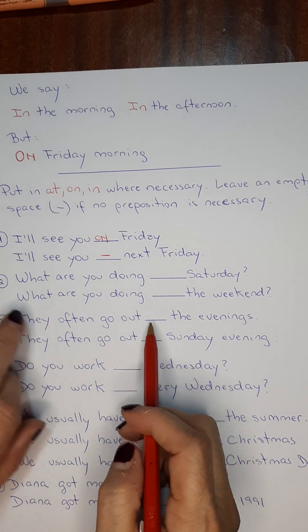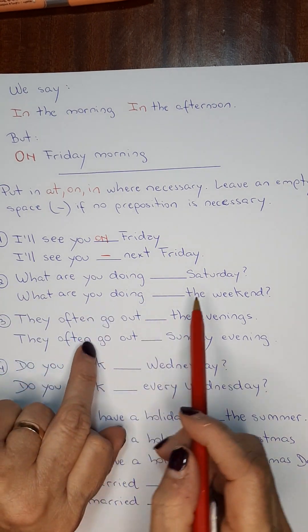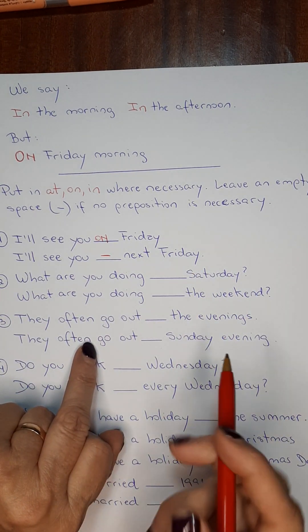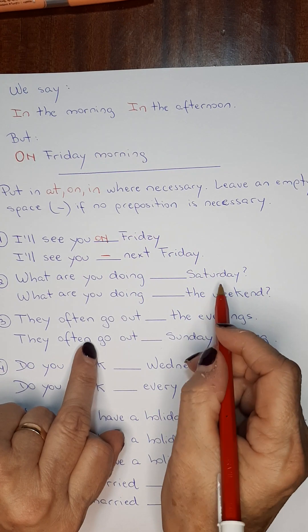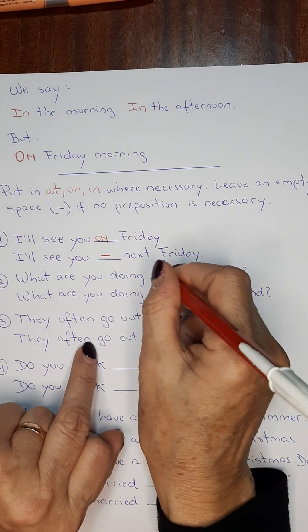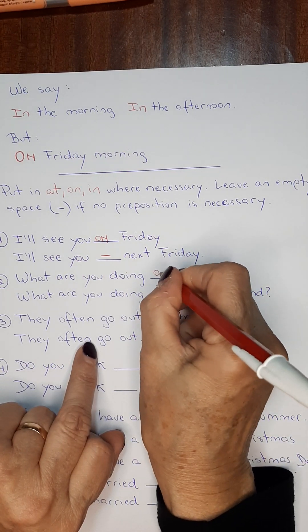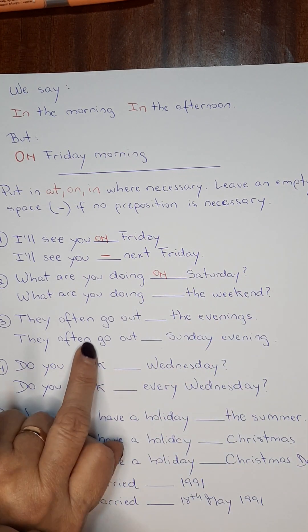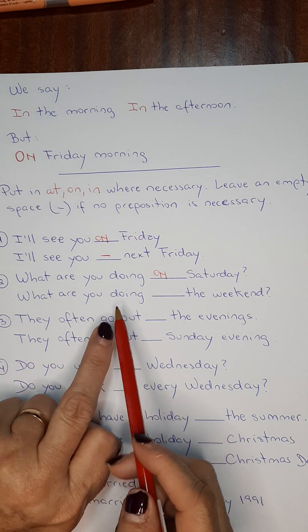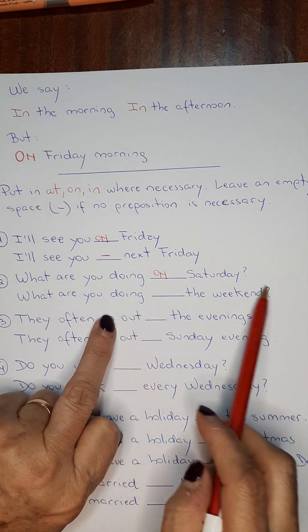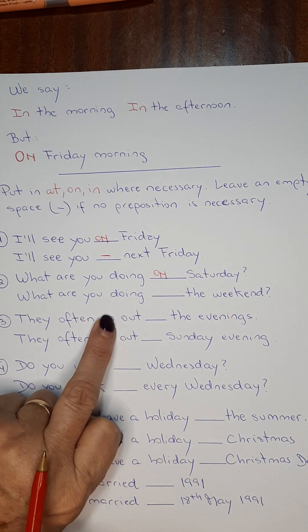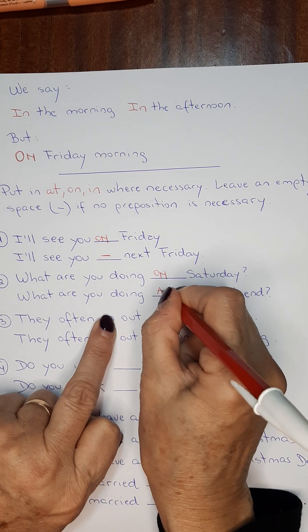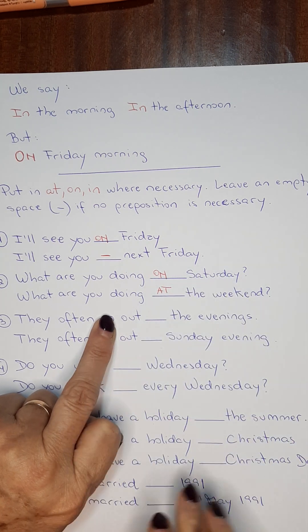Number two: What are you doing Saturday? Again, we have a day, so on. What are you doing on Saturday? What are you doing the weekend? At the weekend.